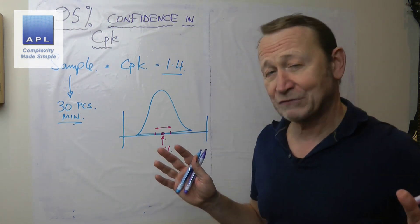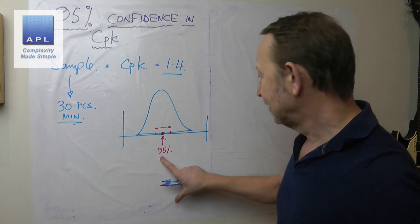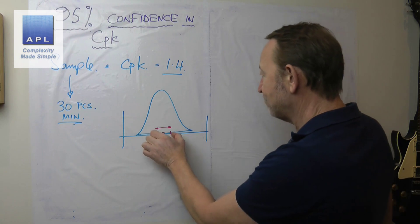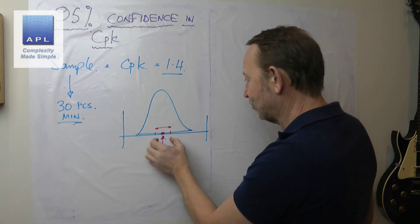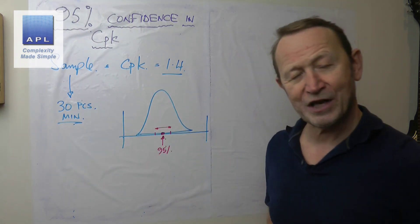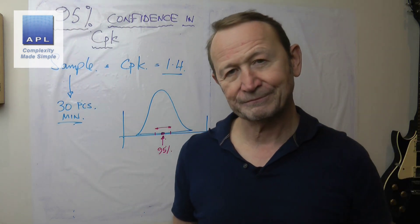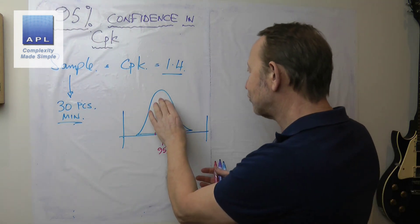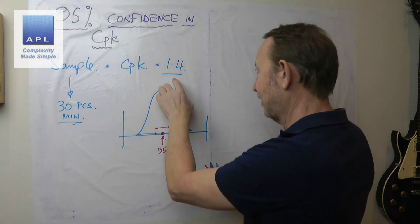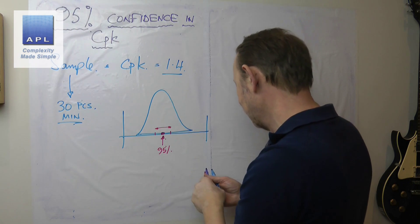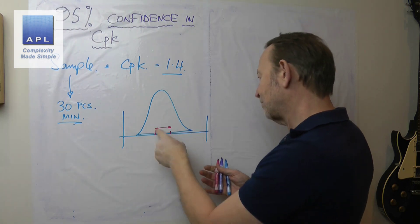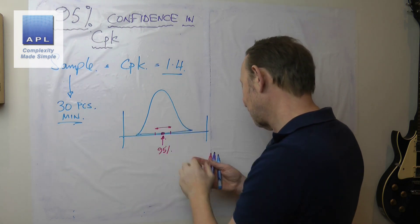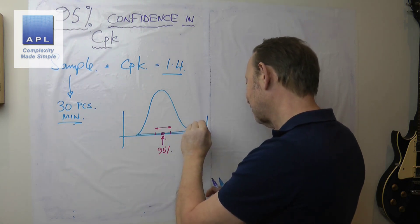If we work out a 95% interval—and you can work out 99% intervals by the way—what we can say is the mean for this distribution, we are 95% certain, lands in there. This means that although this is an estimate of what's going on, and therefore this is an estimate of the CPK, the distribution could be slightly to the right or slightly to the left.